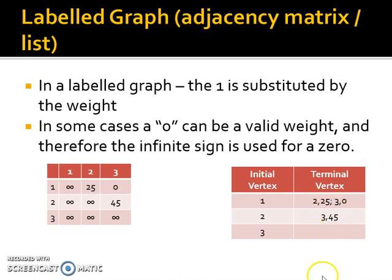Notice the semicolon between each connection. So this is connecting to vertex two with a weight of 25. Connecting to vertex three with a weight of zero. Connecting to vertex three with a weight of 45.